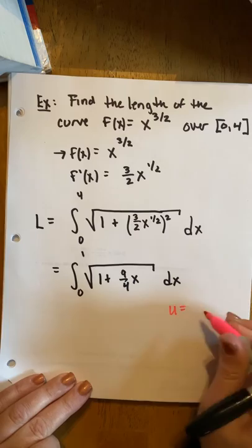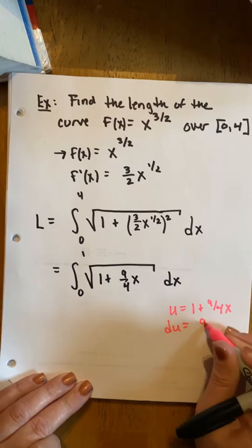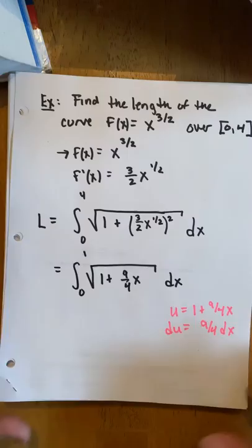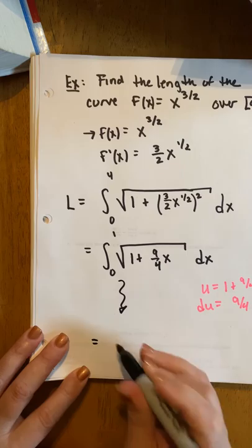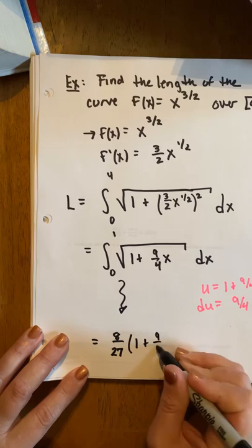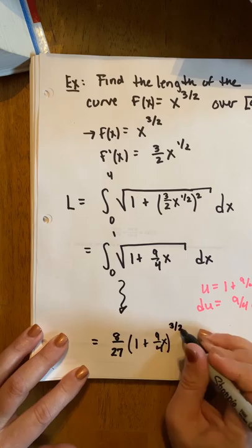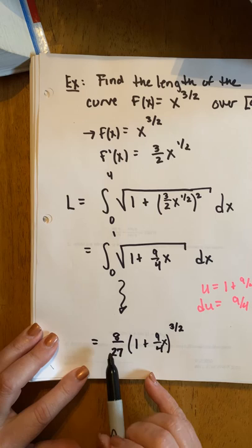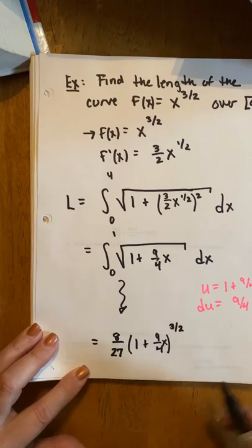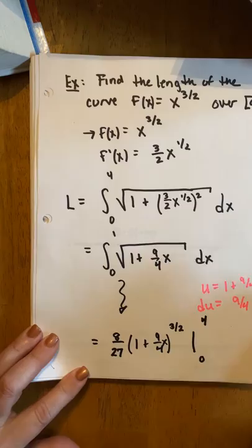So this is a substitution problem. We're going to let u equal 1 plus 9 fourths x. du would be 9 fourths dx. I'll let u do the substitution, no pun intended, and this is going to result in 8 27ths, 1 plus 9 fourths x, don't lose the x, to the 3 halves. Let's just double check, we bring the 3 halves out front, we get 4 over 27, 4 over 9, and then we multiply by the 9 fourths, so that will work. We go from 0 to 4, plug in the upper limit, plug in the lower limit.